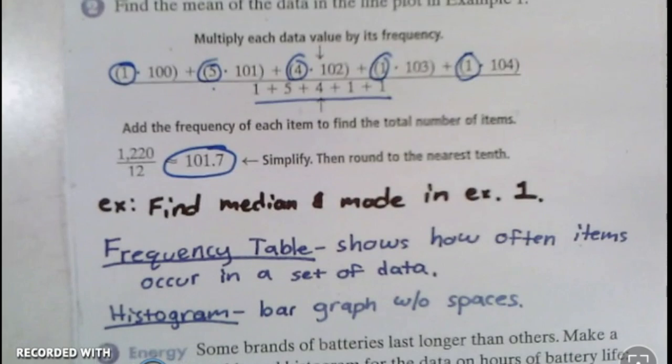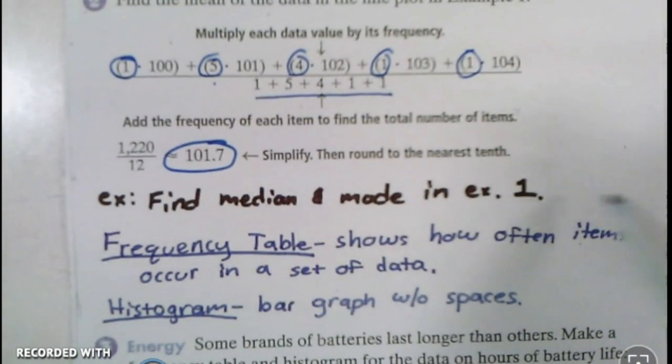The next thing says to find the median and the mode in example one. I already told you how to do that. I would like you to go back and do that and write it in right here of what you found the median and the mode was.